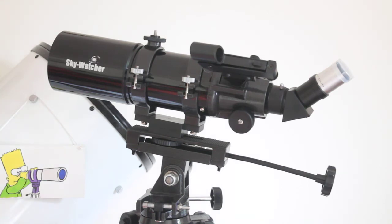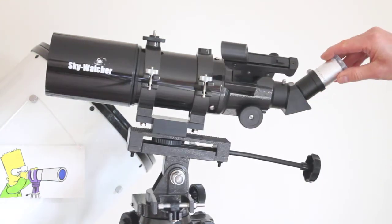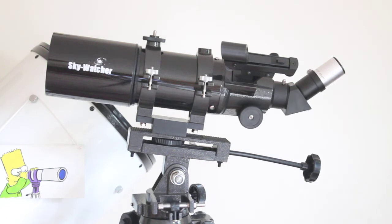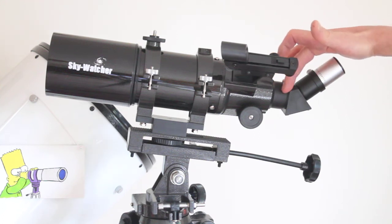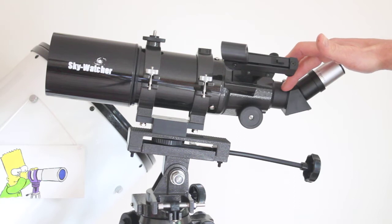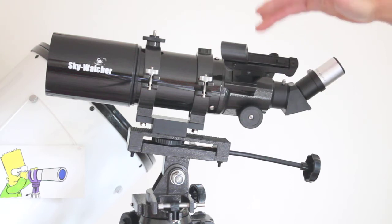So today we're going to have a quick look at the Sky-Watcher Star Travel AT or the ST-80 as some people know it. ST stands for short tube, and this one is only 39 centimeters long. As an example, in the background you can see my 12-inch Dobsonian, which is pretty much the same width as this is long.